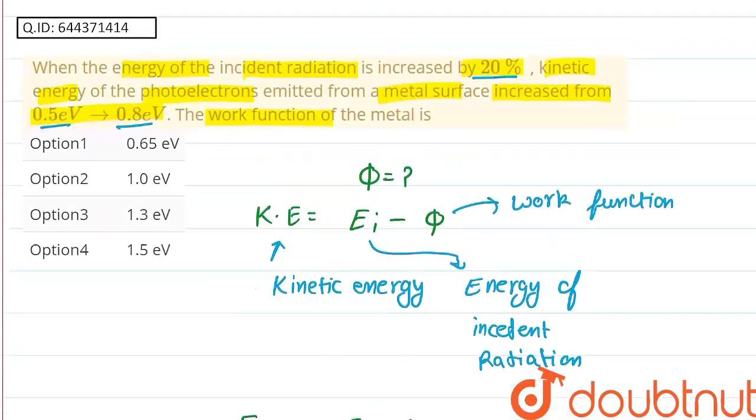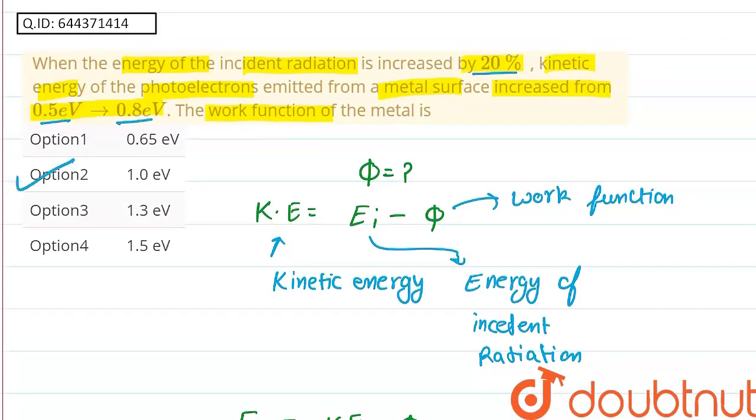Now which option should be the correct option? Option 2 is the correct option, that is 1 electron volt. Thank you for watching.